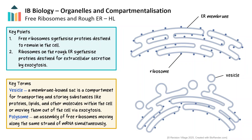Ribosomes are tiny structures where proteins are made, and they come in two main types: free ribosomes floating in the cytoplasm, and ribosomes attached to the rough endoplasmic reticulum, or RER. Free ribosomes make proteins that stay inside the cell — things like enzymes used in reactions or proteins that help keep the cell's structure. Several free ribosomes can attach to a single strand of messenger RNA and be translating it simultaneously; this assembly is called a polysome. Ribosomes on the rough endoplasmic reticulum make proteins that are sent elsewhere, moving through the endomembrane system, often going to the Golgi apparatus for modification, and then shipped out of the cell or delivered to places like lysosomes or the cell membrane. The main difference is where those proteins are destined for: free ribosomes make proteins for use inside the cell, while RER-bound ribosomes make proteins for transport and secretion.